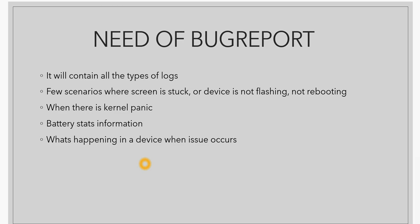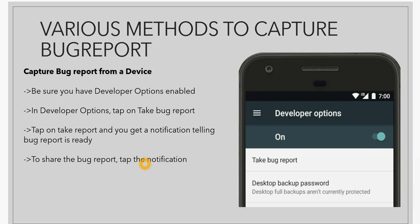Whenever an issue happens, if we collect the bug report and review the logs, we will come to know the exact root cause of the issue. Next, we will see the various methods to capture the bug report. There are three different methods: the first one is capturing a bug report directly from a device.